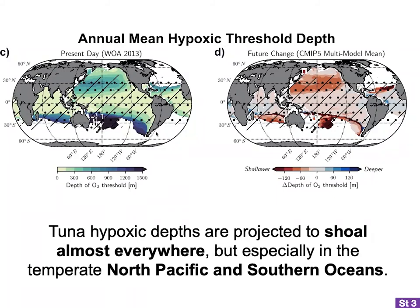We created a map showing current-day tuna hypoxic depths as defined in story number one — shallower in the tropical regions and deeper in the temperate regions. Tuna have more vertical space in the darker spots and less in the lighter areas. These tuna hypoxic depths are projected to get shallower throughout most of the global oceans, reducing available oxygenated vertical habitat space for many species. By 2100, projected shoaling of tuna hypoxic depths is greatest in the temperate North Pacific as well as parts of the Southern Ocean.